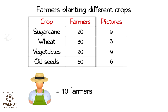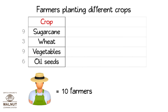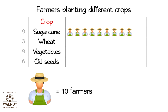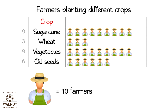We lightly write the number of images that we need. Now let's put the images and make it a proper pictograph. We make space for the images, then go on putting the images for each crop. After it's done, we erase the numbers we had written to the left, and the pictograph is ready.